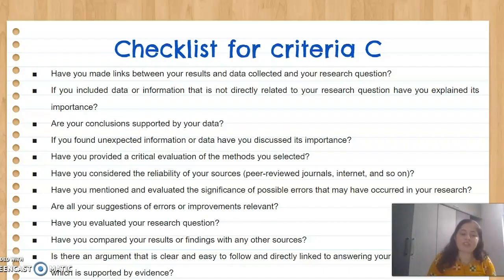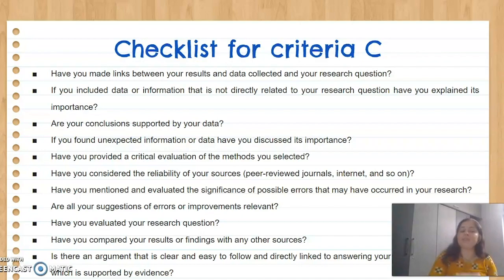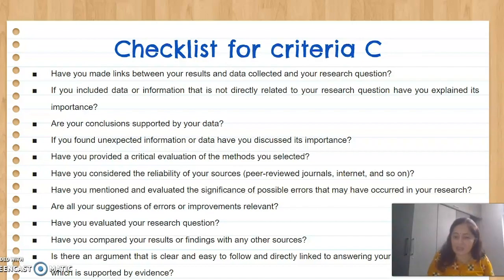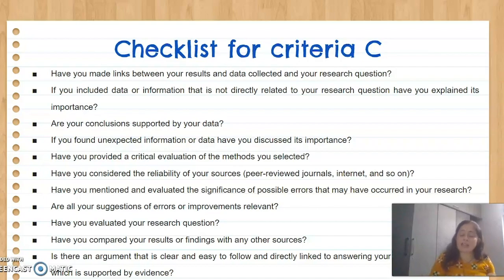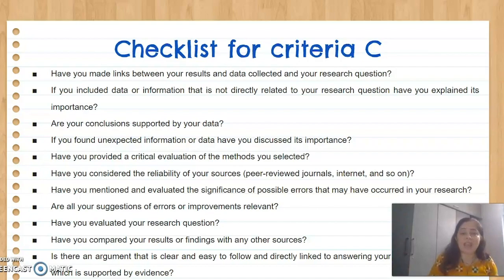In short, the checklist for Criteria C says: check whether the links between your results, data collected, and your research question are properly established. If you included data or information not directly related to the research question, have you explained its importance? Are your conclusions supported by the data? If you found unexpected information or data, have you discussed why you used it? Have you provided a critical evaluation of the methods you selected? Have you considered the reliability of your sources — for example, if it's a journal article, is it a peer-reviewed journal, or is it from an authentic internet source?